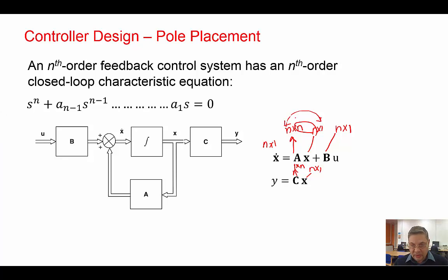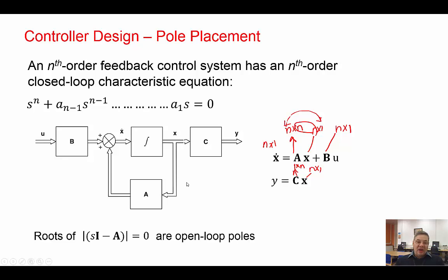The block diagram shows the system and the equations show the familiar state space representation where X are the state variables. This is open loop — there is no control, it's just the representation of G, the system transfer function in state variables. The roots can be given from the characteristic equation, but that's for the open loop.